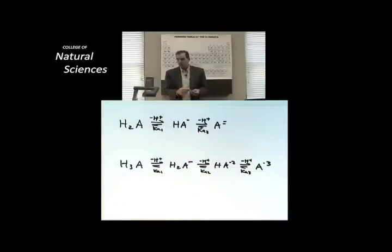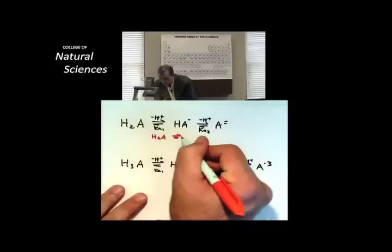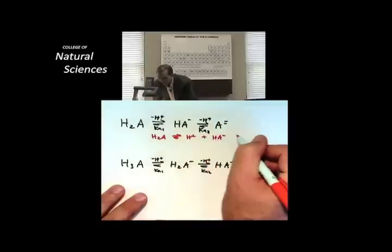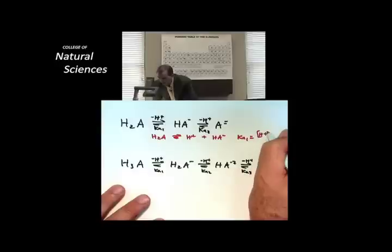Now having shown you this in this nice line format, the real thing you need to learn to do is to actually set up the equilibria stepwise by themselves, and I'm going to do that and then show you the K values associated with them. So here's H2A going to make H+ and HA-, and that KA1 is equal to the stuff on the right over the stuff on the left. There you go.